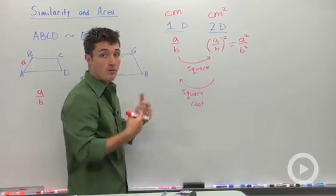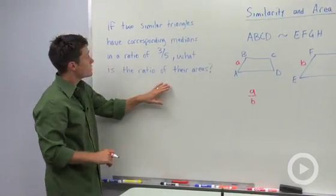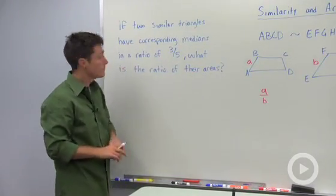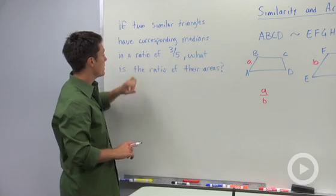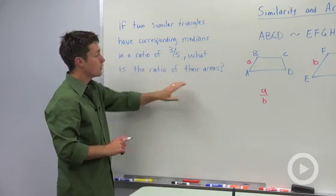Let's look at a brief example of how we can apply this. Here it says, if two similar triangles have corresponding medians in a ratio of three to five, what is the ratio of their areas?